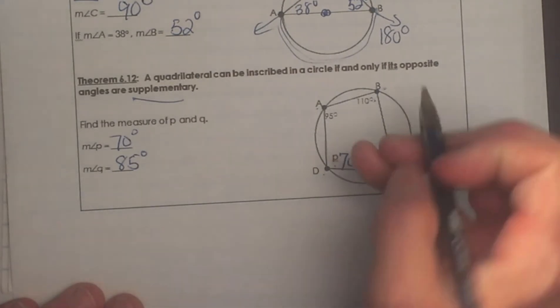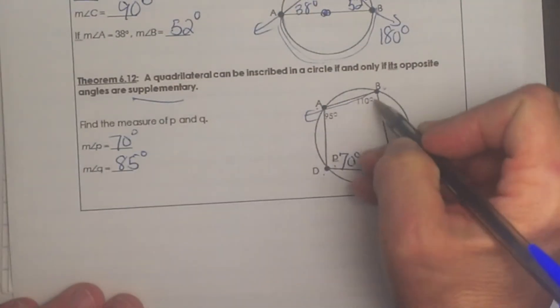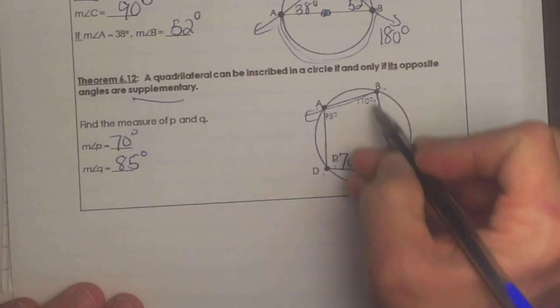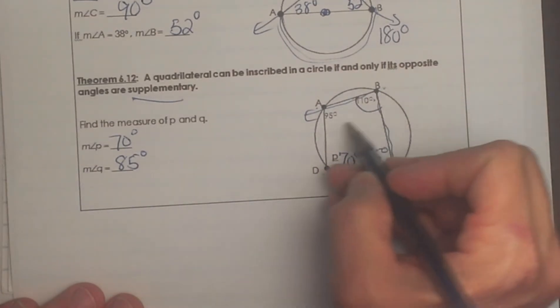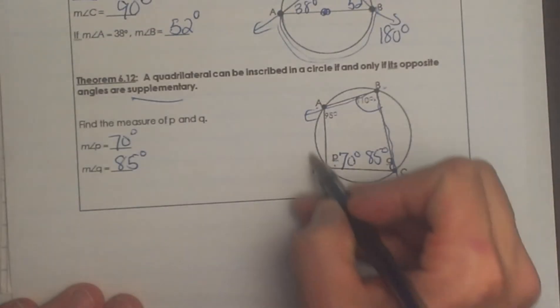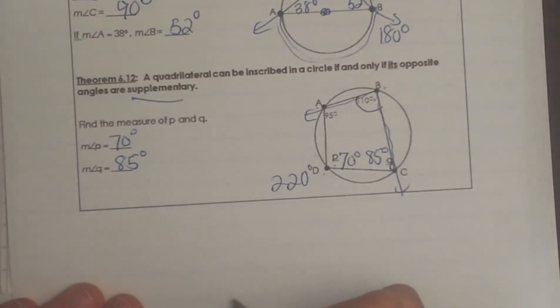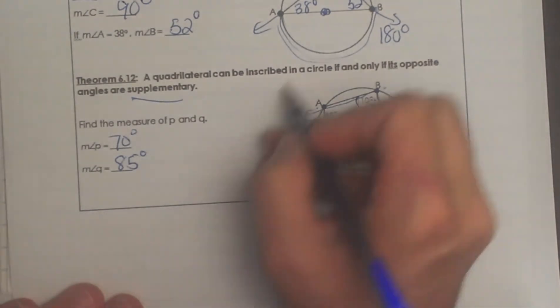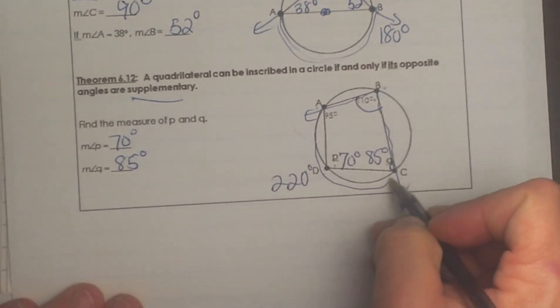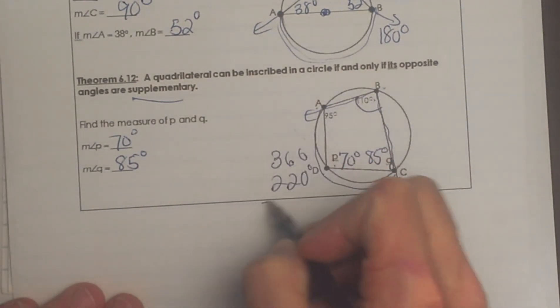Now let me explain why that works. It is the same concept. If I take angle B and I know it is inscribed that is 110. If I look at this arc that must mean I double it to 220. What do I know about a circle? 360 degrees in the whole thing.